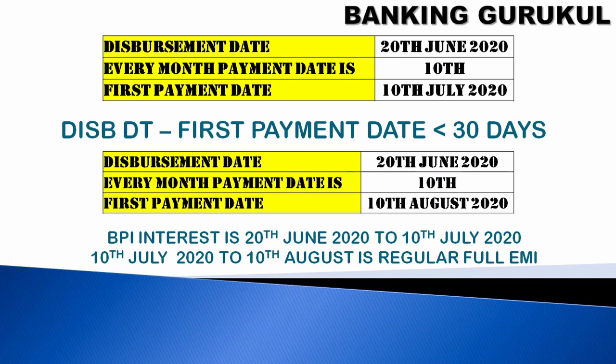This broken period interest can be collected from the customer in three ways. First, the bank can ask the customer for a separate check for the broken period interest. Second, the broken period interest can be added into the first EMI, so the first EMI will be higher while the remaining EMIs stay the same. Third, when money is received from the customer, the bank first adjusts the broken period interest and then applies the regular EMI.